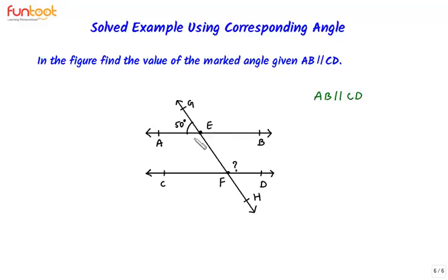Here, if we use the property of linear pairs, we can see that this angle and this angle form a linear pair. That means the sum of 50 degrees and the measure of this angle should be 180 degrees. For that to happen, the measure of this angle should be 130 degrees.